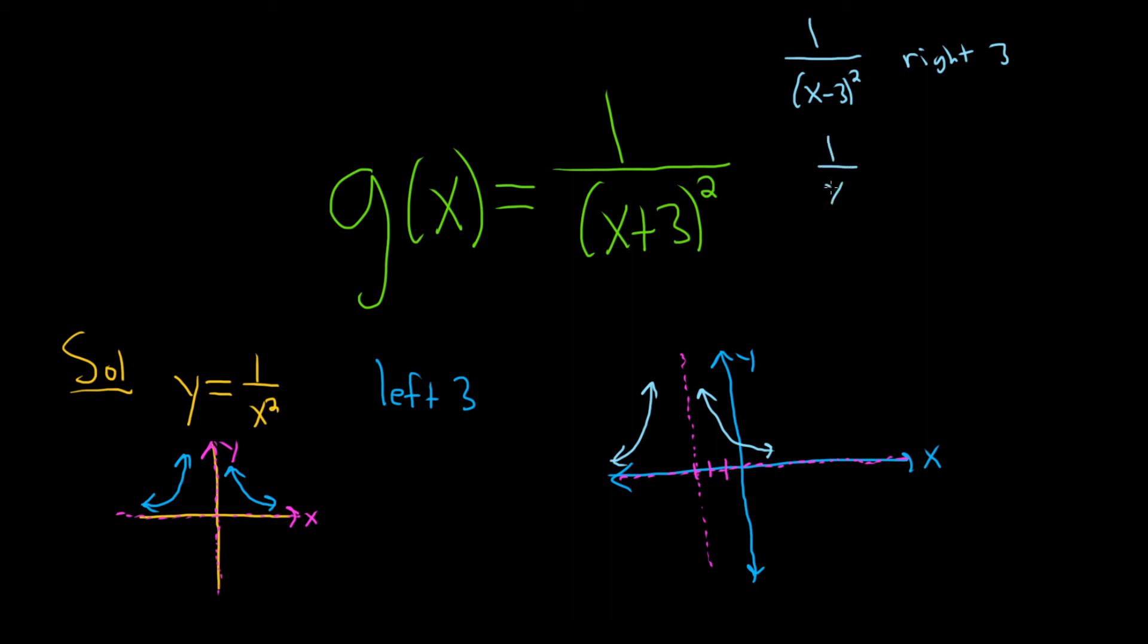What if it was 1 over x squared plus 3? Well, whenever you add to the actual y value, you go up. So in this case, up 3. And if it was 1 over x squared minus 3, then you would go down 3.